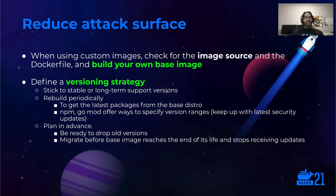And in case you find a custom but untrusted image that works for you, take the Dockerfile as an example and build your own base images instead of relying on untrusted published images. In any case, please define a versioning strategy — you will have to update your images often. Try to stick to stable long-term support versions so you are sure you will be receiving fixes for a while. Then rebuild periodically or whenever new fixes are applied to the base image. Also, don't forget about libraries — tools like npm or Go offer ways to specify version ranges in dependencies. Finally, plan in advance and be ready to drop old versions when they reach end of life.